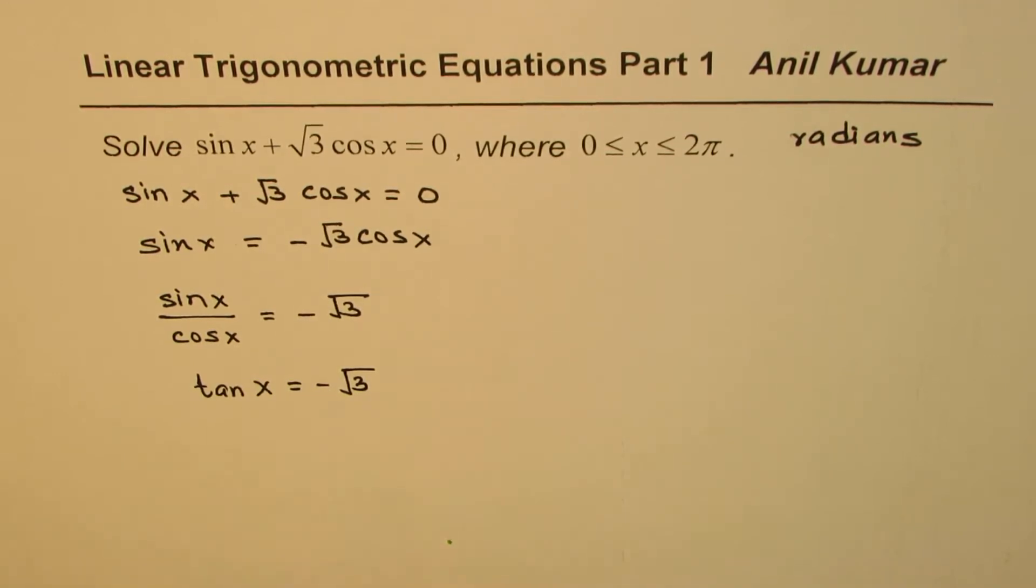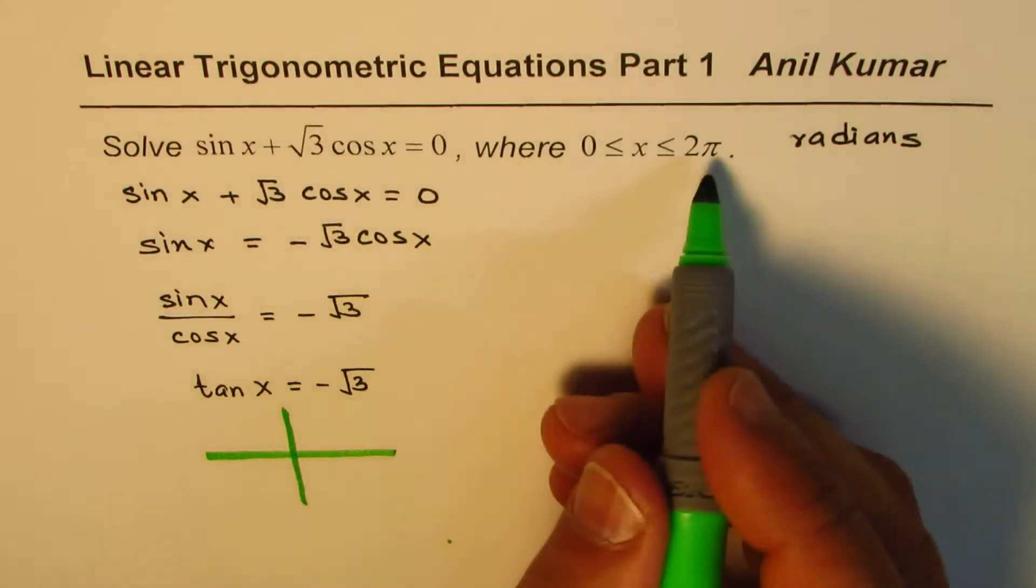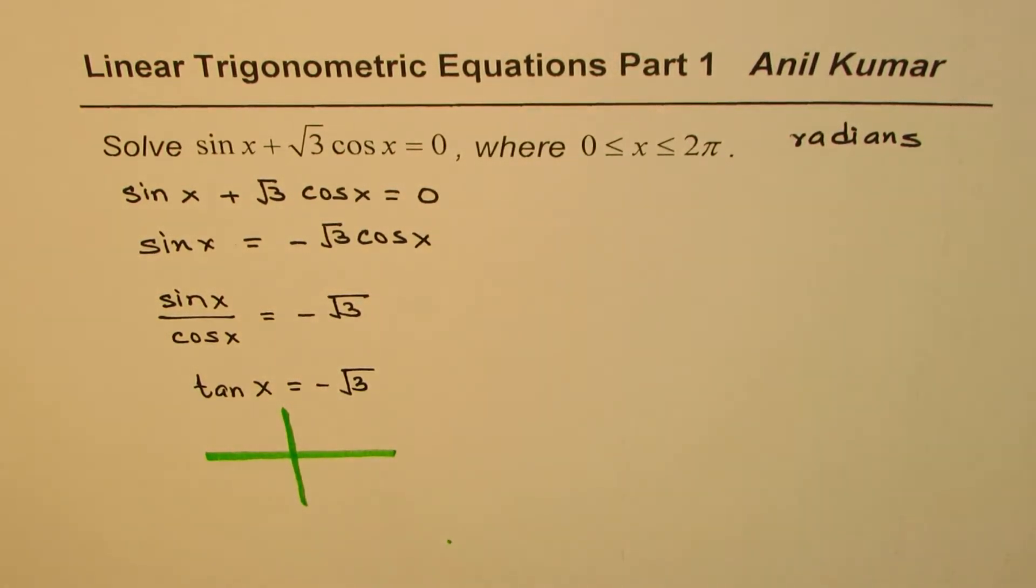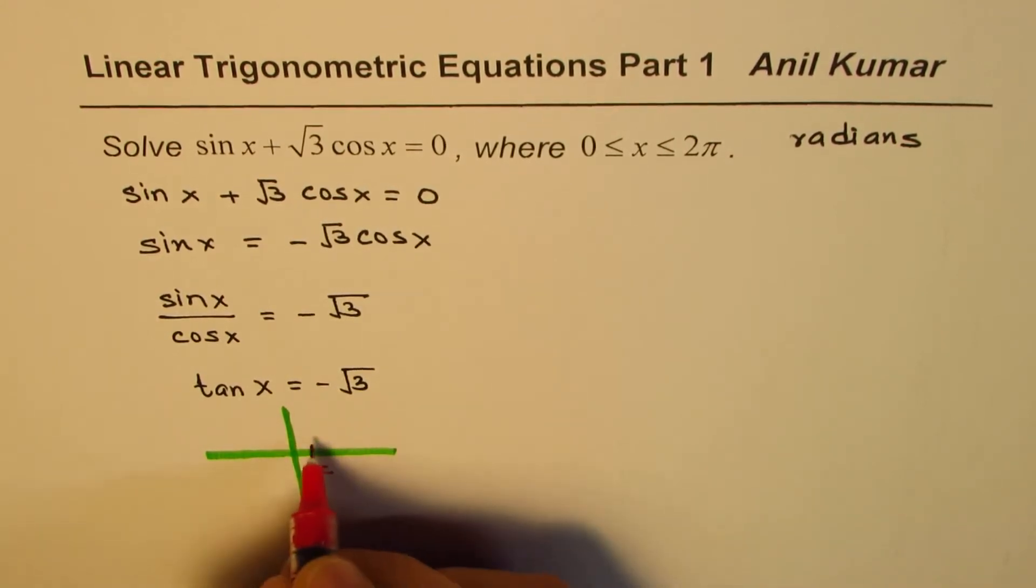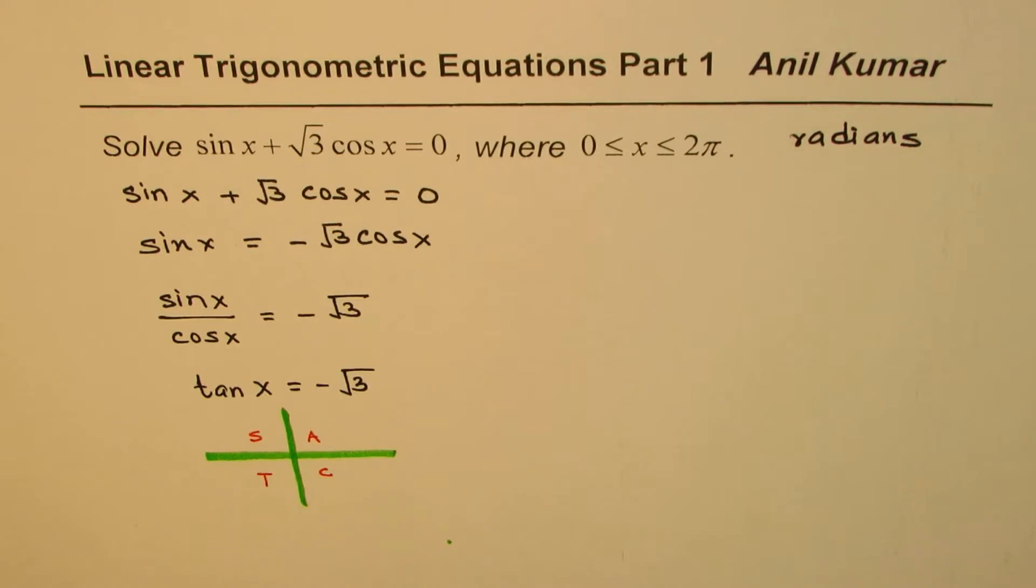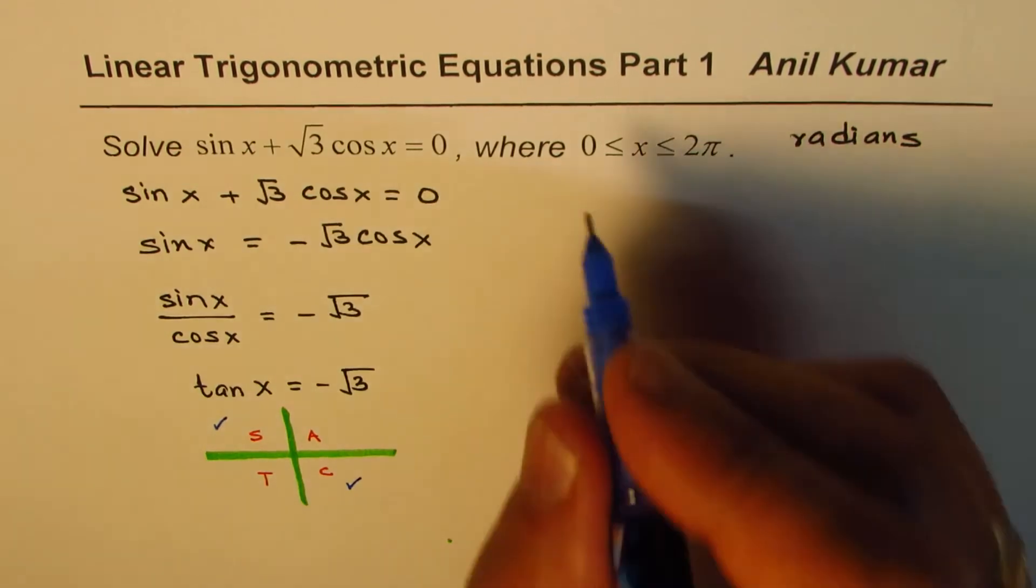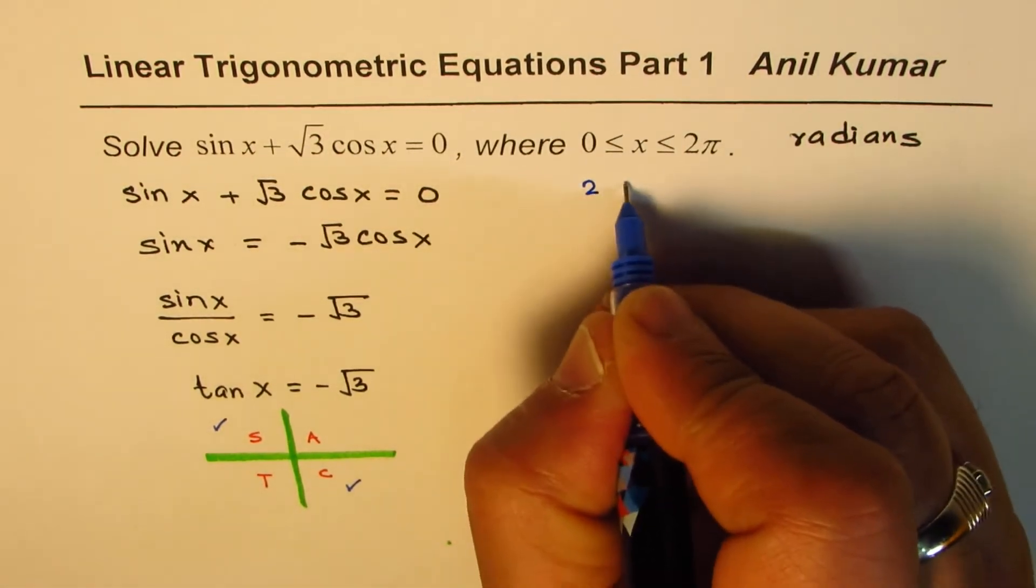Now to find this solution, first we should understand: tan x equals minus square root 3, how many solutions are we looking for? Well, if I use the CAST rule, then I know that within 0 to 2π, that means one full circle, tan is negative in two quadrants. Tan is negative in quadrant 2 and in quadrant 4. So we have two possible solutions.